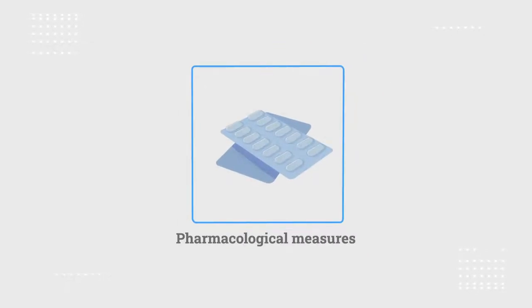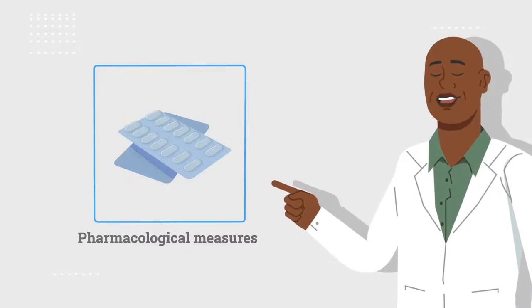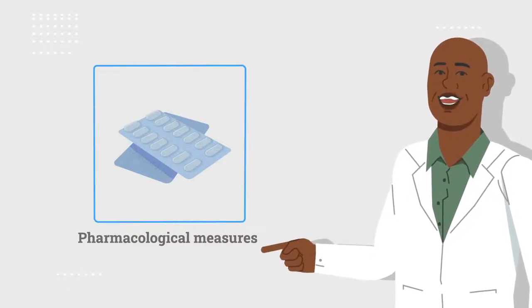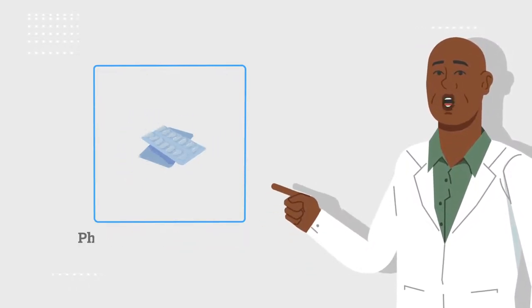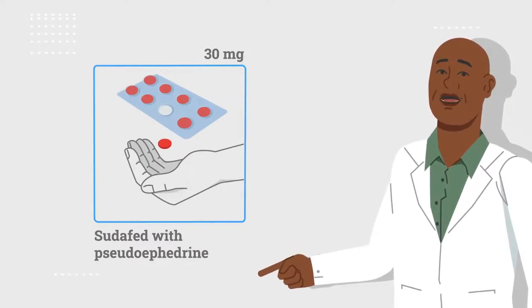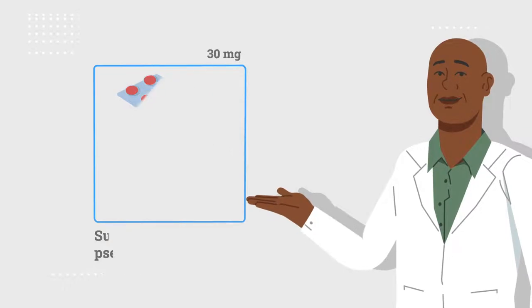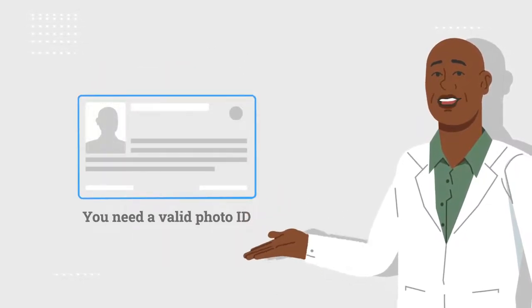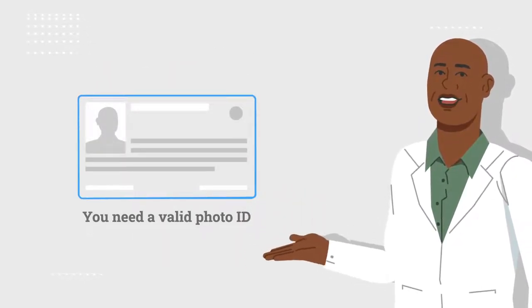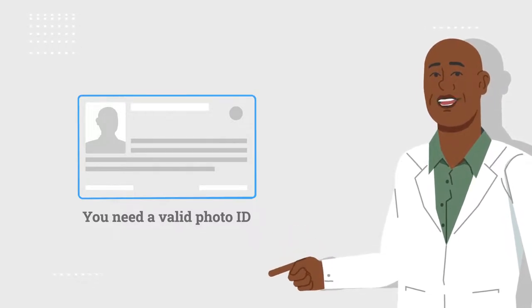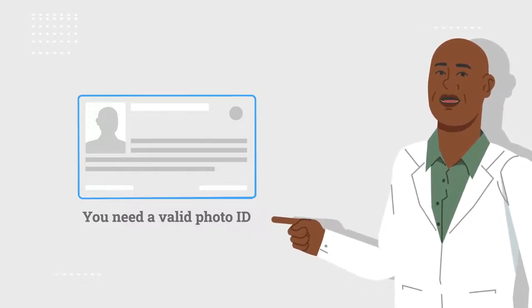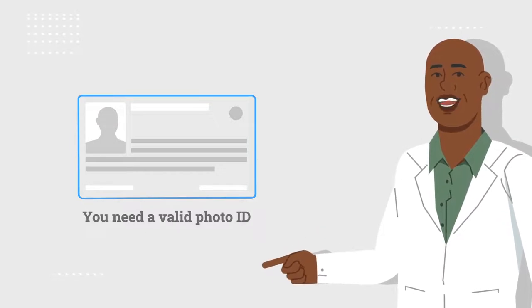There are also over-the-counter OTC pharmacologic measures. We recommend you keep these medications on hand at home when on a Trimix protocol. Sudafed with pseudoephedrine. You should take 30 mg orally. Due to federal regulations that require medications containing pseudoephedrine be sold behind the pharmacy or service counter, you will need to provide a valid photo ID to purchase this medication.